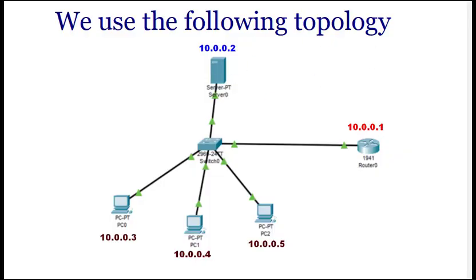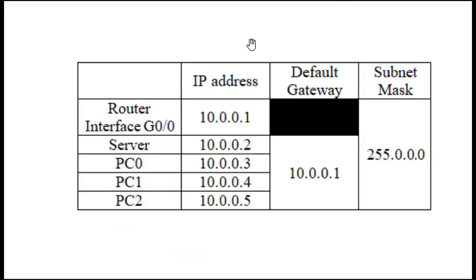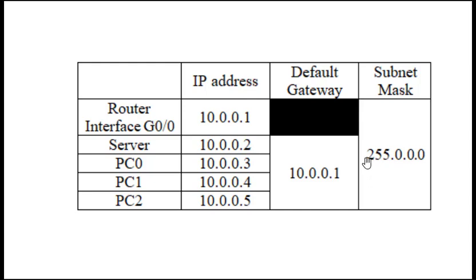This is the topology we'll be using. We'll have a server, three PCs, a switch, and a router. Their IP addresses are also mentioned. Router interface G0/0 will have IP 10.0.0.1, server is 10.0.0.2, PCs are 10.0.0.3, .4, .5, and so on. The default gateway for all hosts will be 10.0.0.1 and the subnet mask will be 255.0.0.0 for each interface.